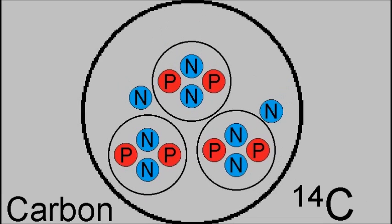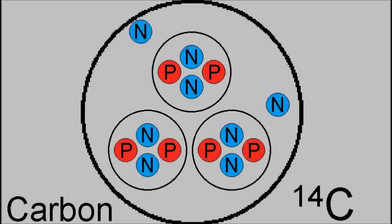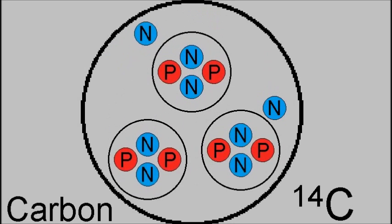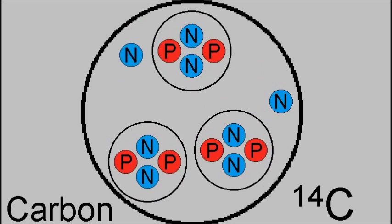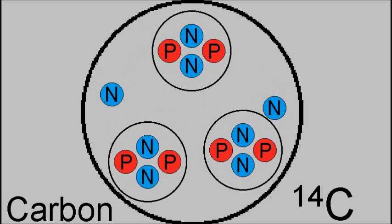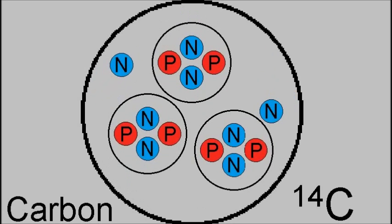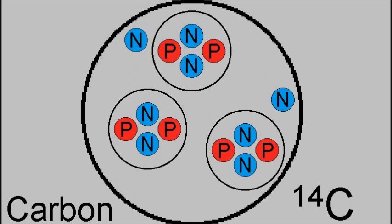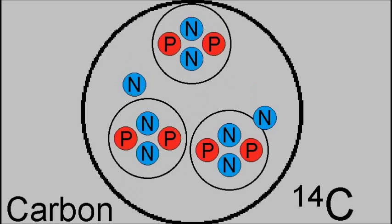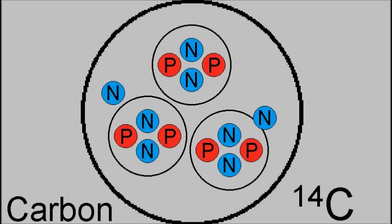Carbon-14 is the third most common form of carbon, and it consists of about 1 part per trillion of all carbon atoms. It has an atomic number of 6 and a particle number of 14, consisting of 6 protons and 8 neutrons. It has an atomic weight of 14.003241, and a half-life of 5,730 years. It is commonly used in the form of radiometric dating.